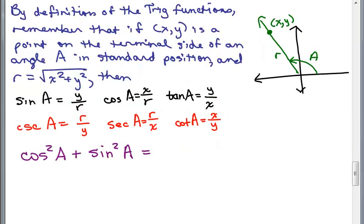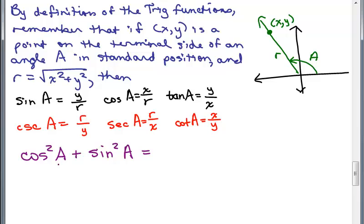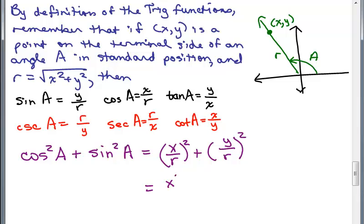Now, using this definition, what would cosine squared A plus sine squared A be? This is the notation for cosine of A squared. The cosine of A is x over r, so this means (x over r) squared. The sine of A is y over r, so we have (y over r) squared. Squaring each gives x squared over r squared plus y squared over r squared. Adding the numerators over the common denominator gives x squared plus y squared over r squared.